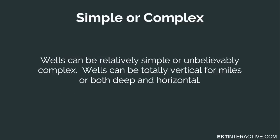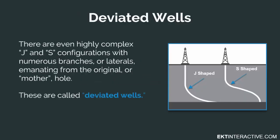Wells can be relatively simple or unbelievably complex. Wells can be totally vertical for miles, or both deep and horizontal. There are also highly complex J and S configurations with numerous branches or laterals emanating from the original or mother hole. These are called deviated wells.